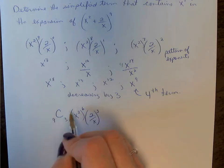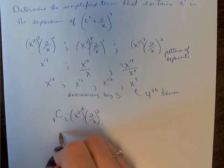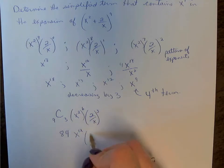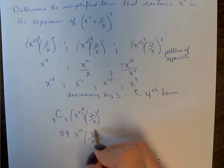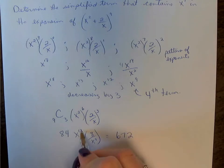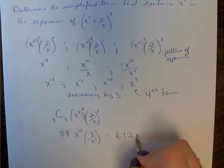Now we can simplify this. 9C3, you can use your calculator or the formula. Multiply your exponents. 2 cubed is 8 over x cubed. 84 times 8 is 672. Subtract your exponents, x^9.